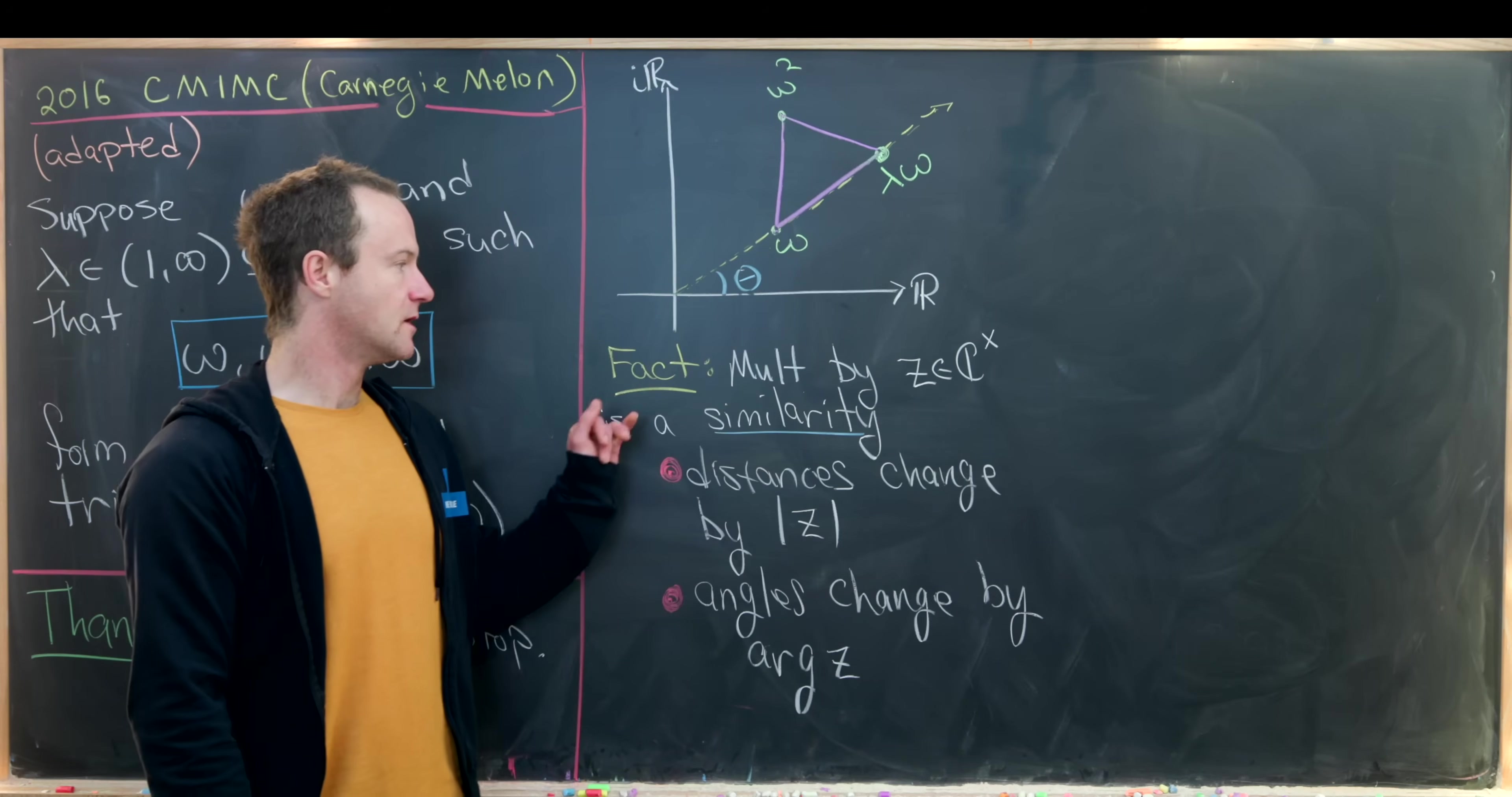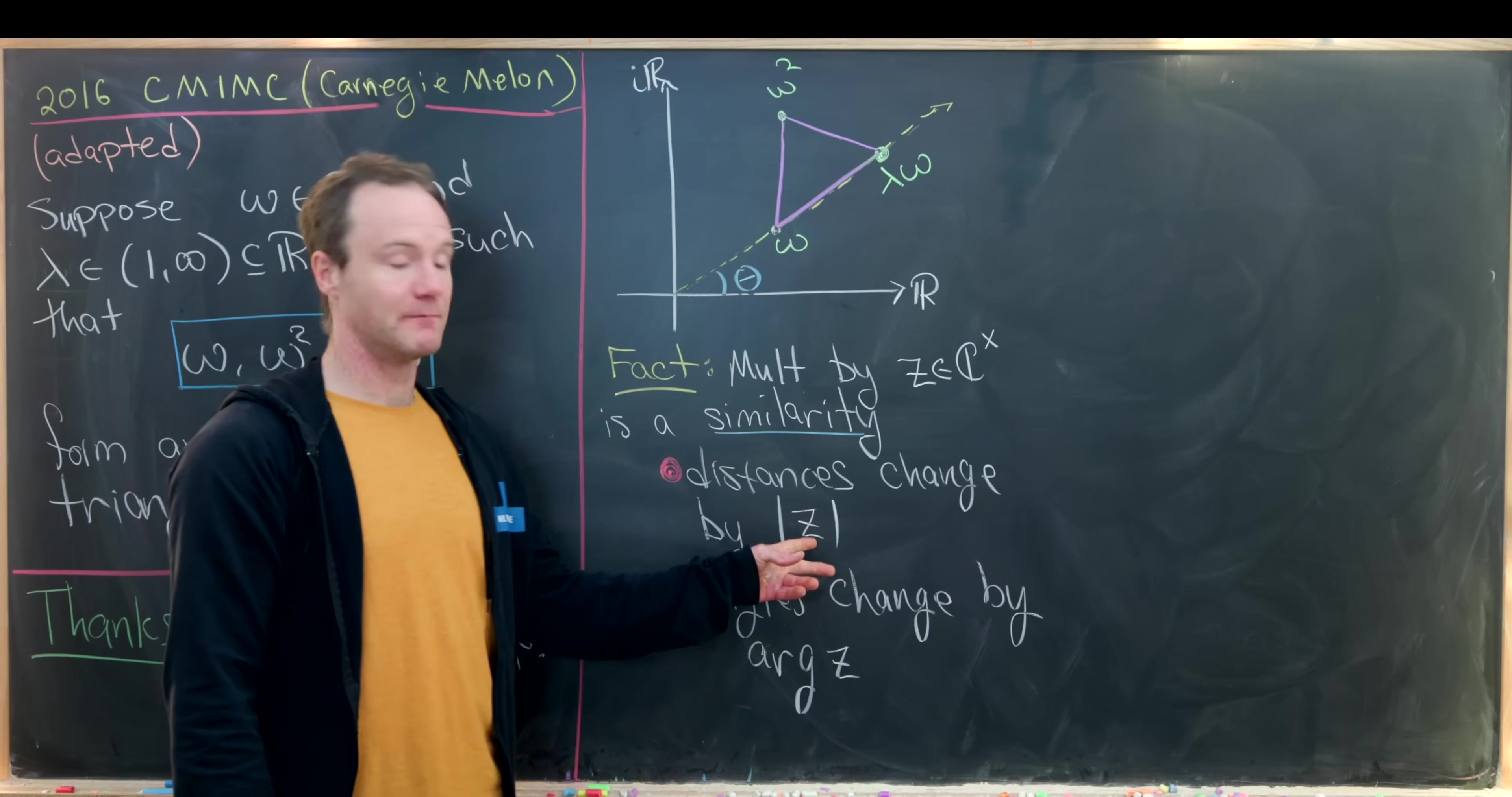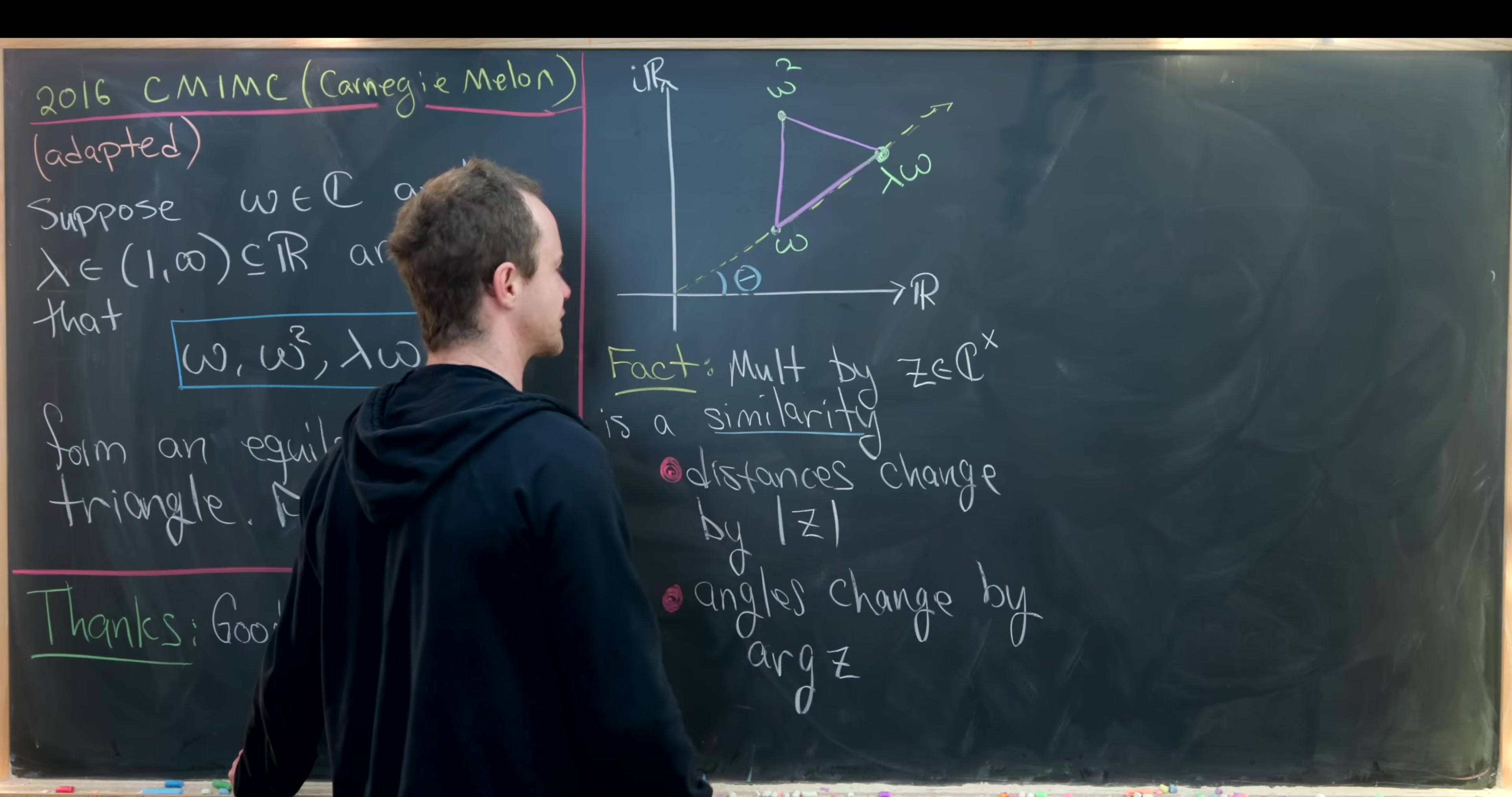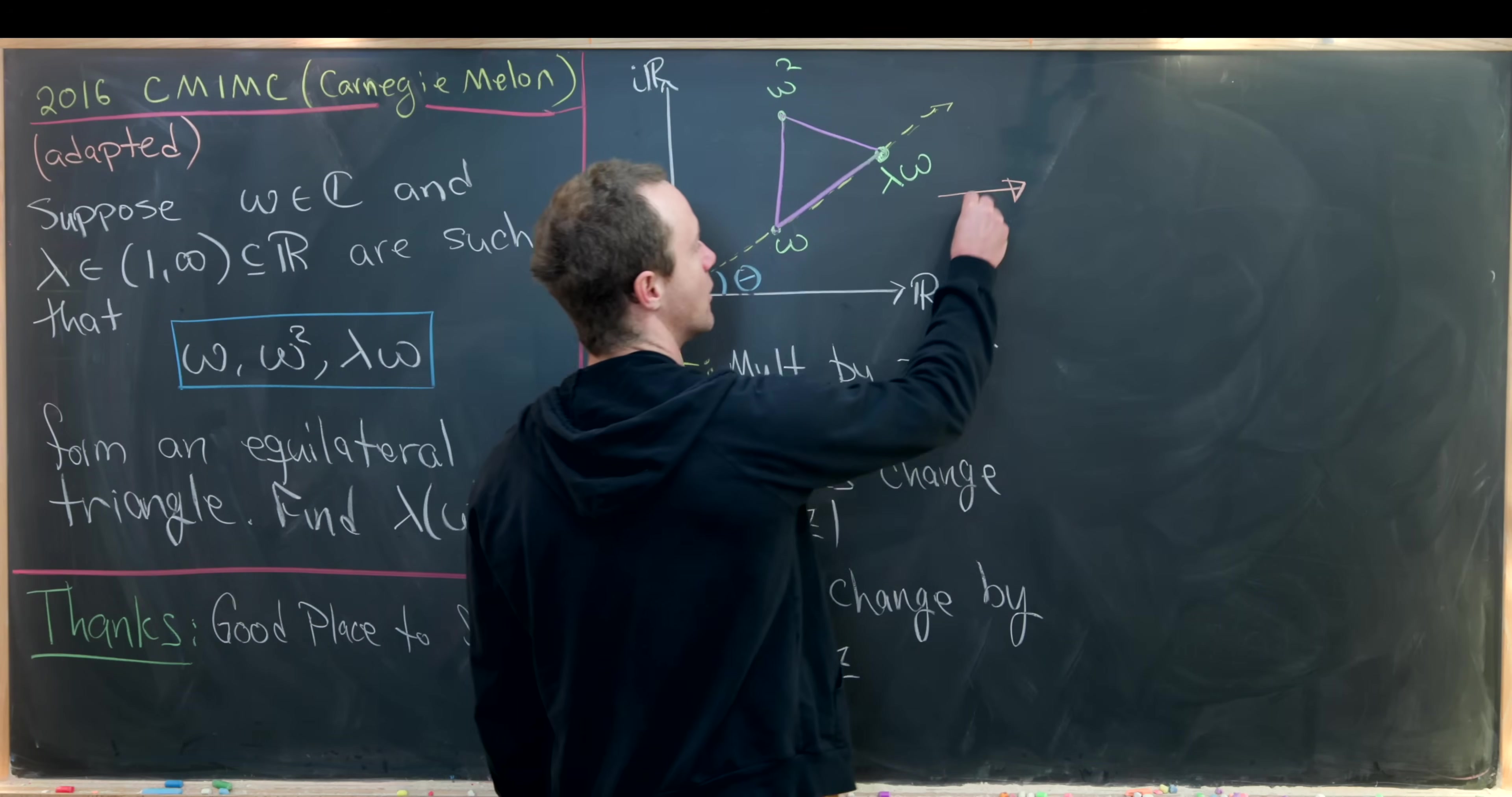So like I just said, multiplying by a non-zero complex number is a similarity of the complex plane. In particular, the distances change by the modulus of z, and the angles change by the argument of z. So looking at our picture, there's probably an advantageous complex number to multiply by.